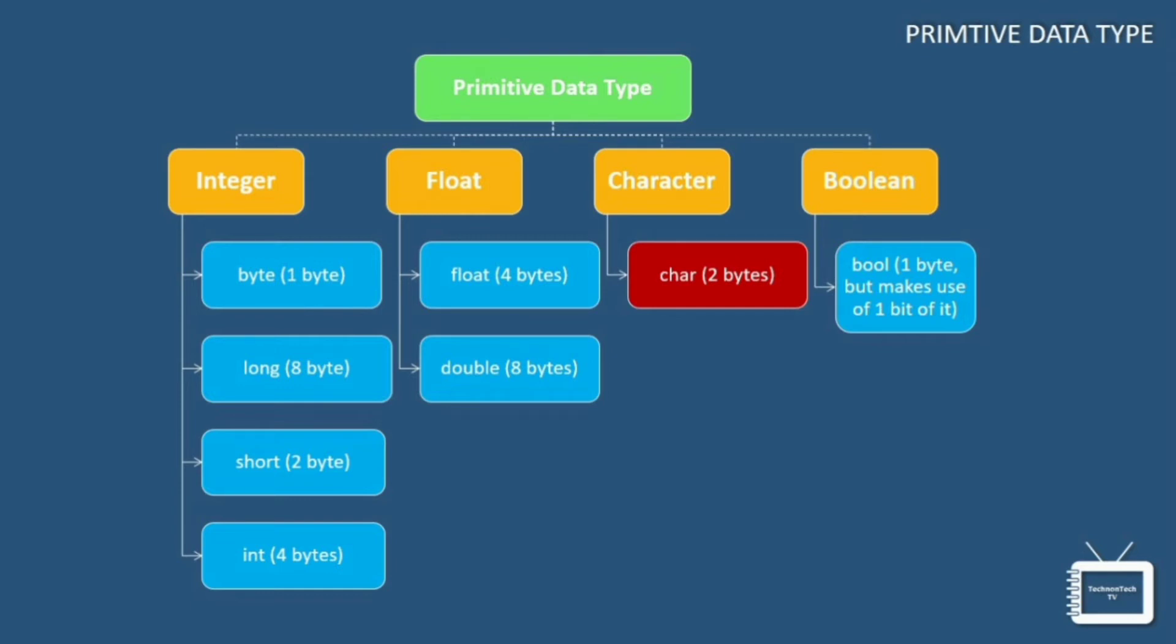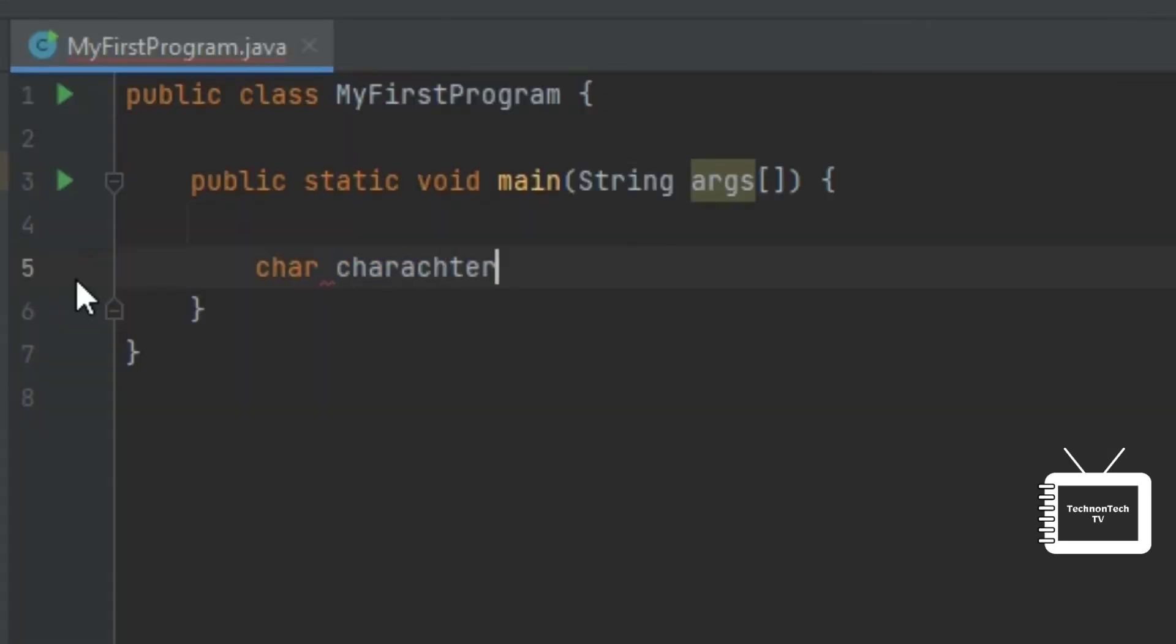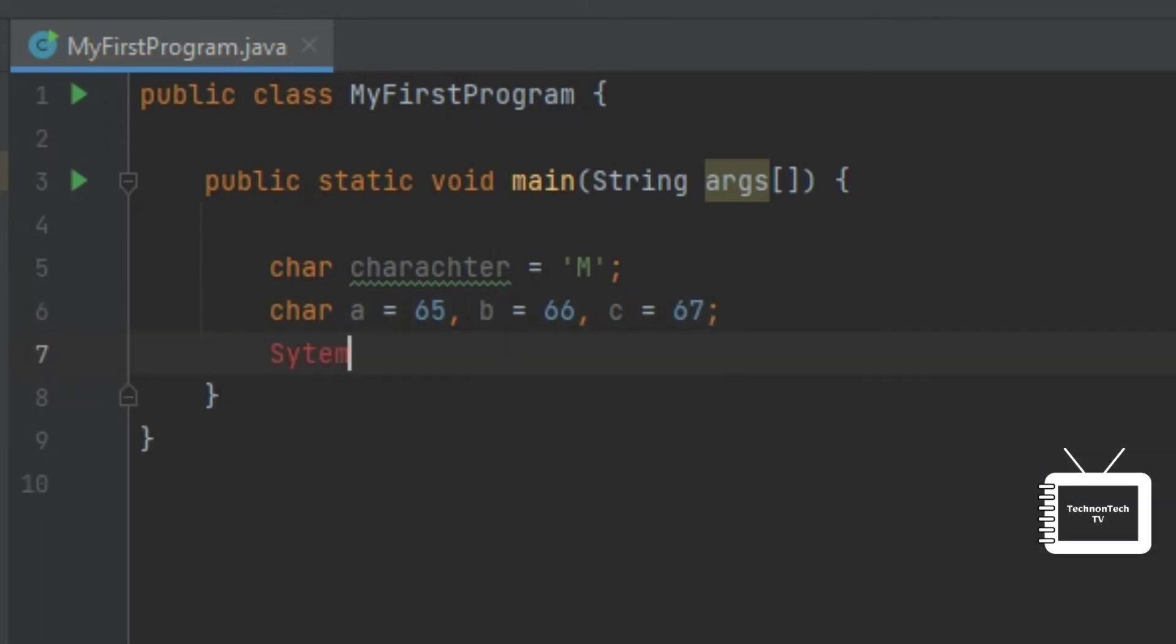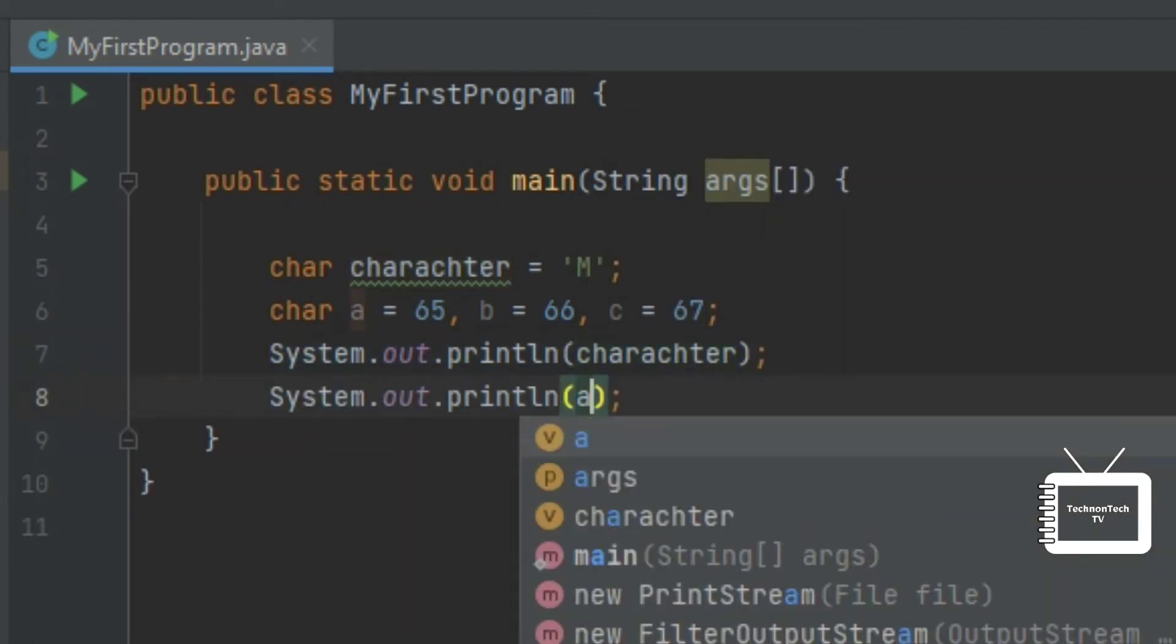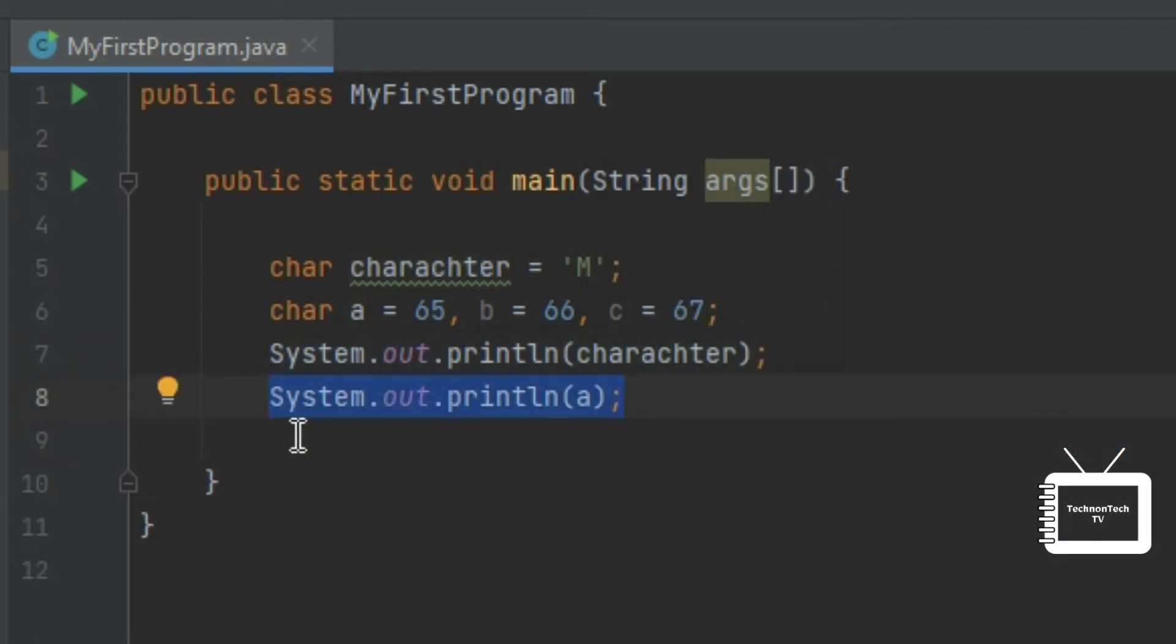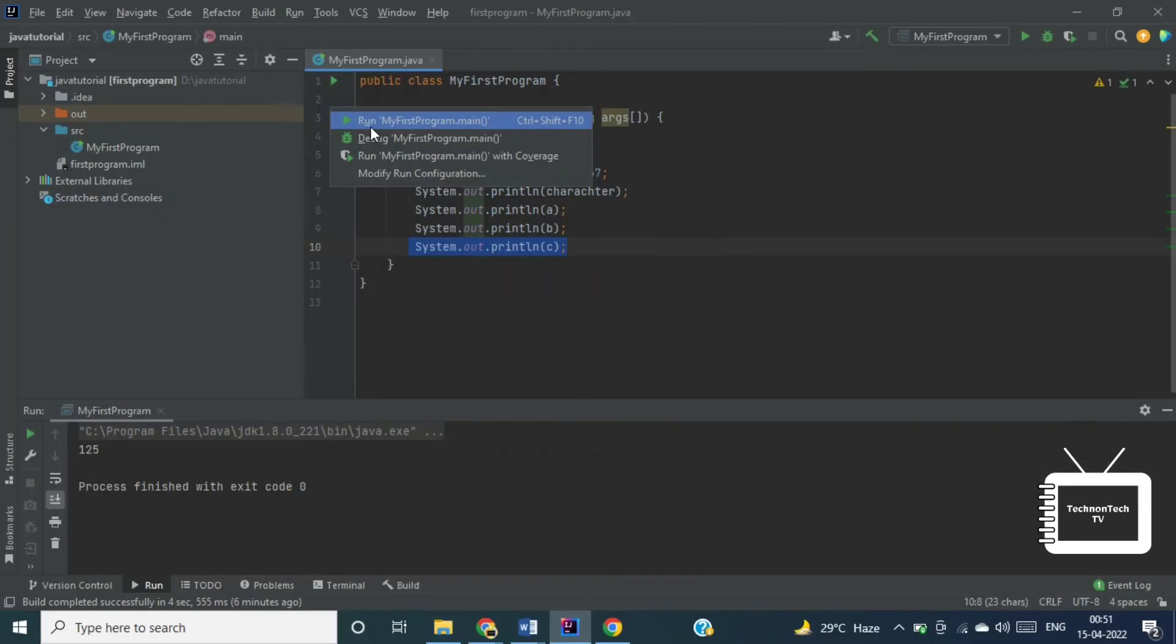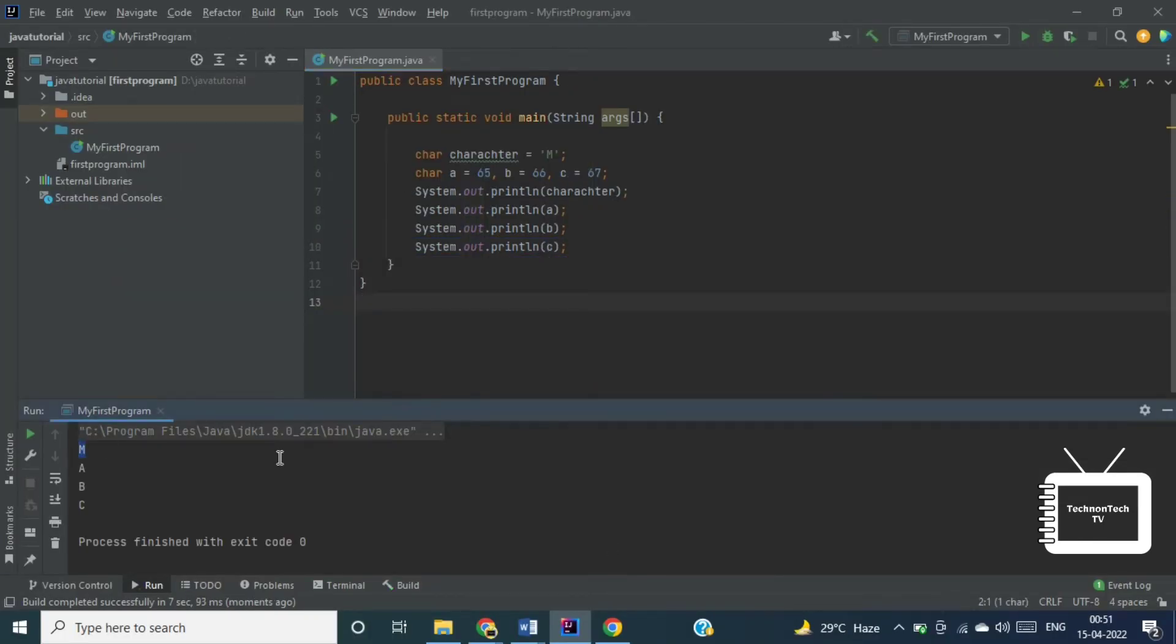Let's take a small example and see how it works. So here I am declaring variable character and assigning value M to it, and also on the next line I am declaring variables a, b and c and passing ASCII values that is 65, 66 and 67. And let's try to print this. Now let's run the program.